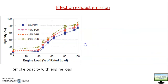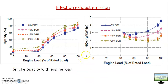The third emission parameter is opacity, which represents smoke capacity. Higher smoke capacity means more particulate matter or unburnt carbon in the smoke — this is part of the unburnt hydrocarbon. Smoke opacity is increasing with EGR. With 10% EGR there is around a 10–15% increase in smoke opacity, indicating more unburnt carbon and fuel particles in the exhaust gases.